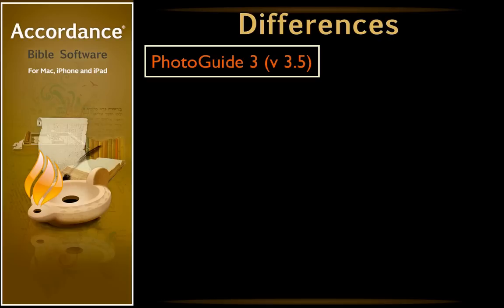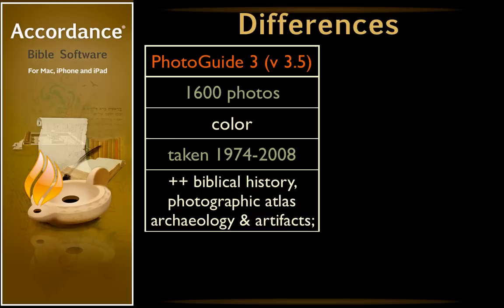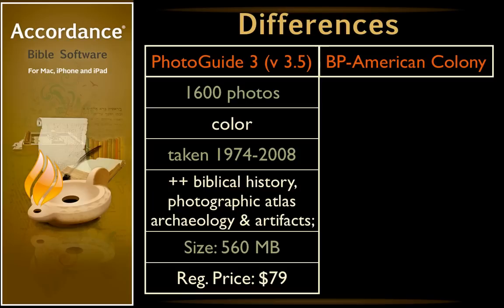Photo Guide 3 contains 1,600 color photographs, taken between 1974 and 2008. It's more like a photographic atlas, with a history of Biblical times and abundant Scripture references. It also has superior photographs of archaeological digs, sites, and various artifacts. Weighing in at 560 megabytes, it's normally priced at $79.